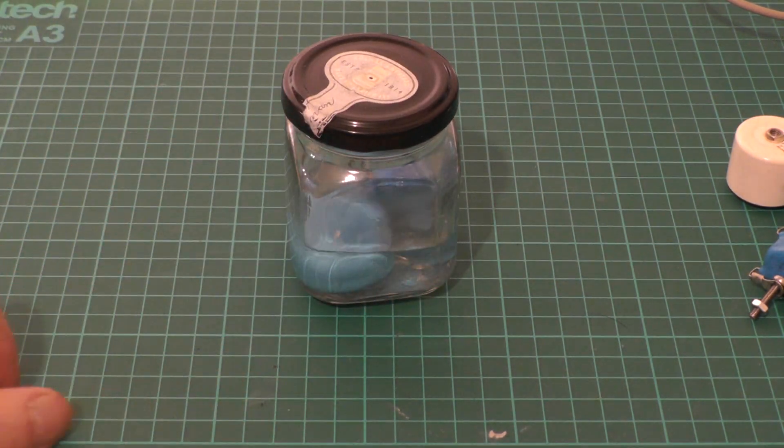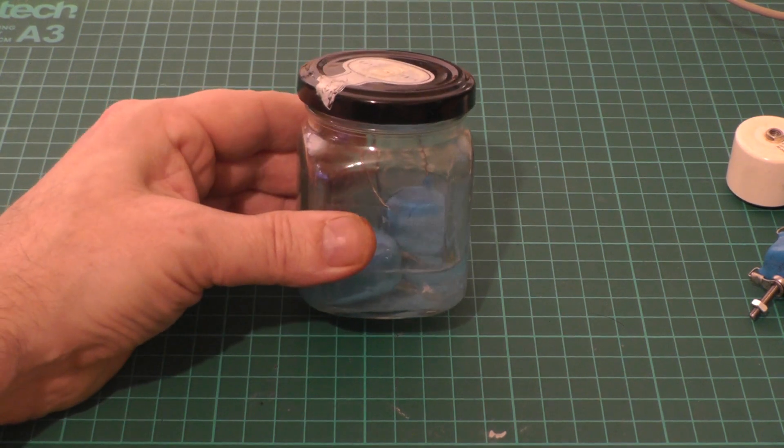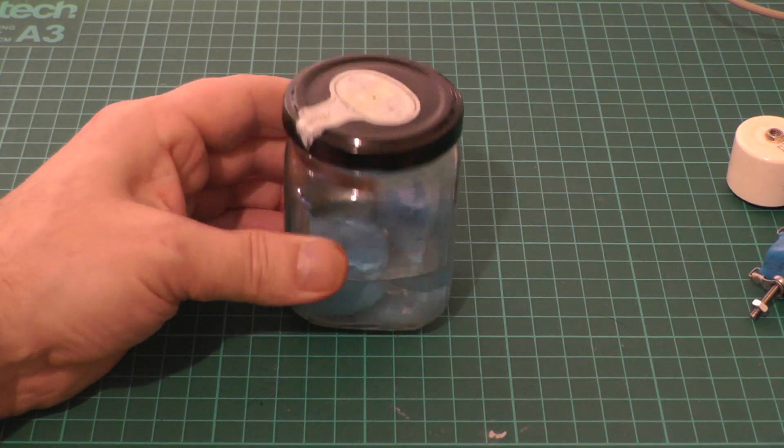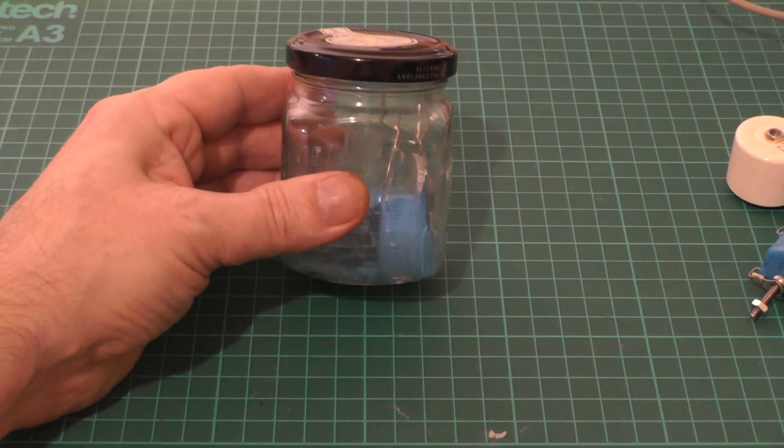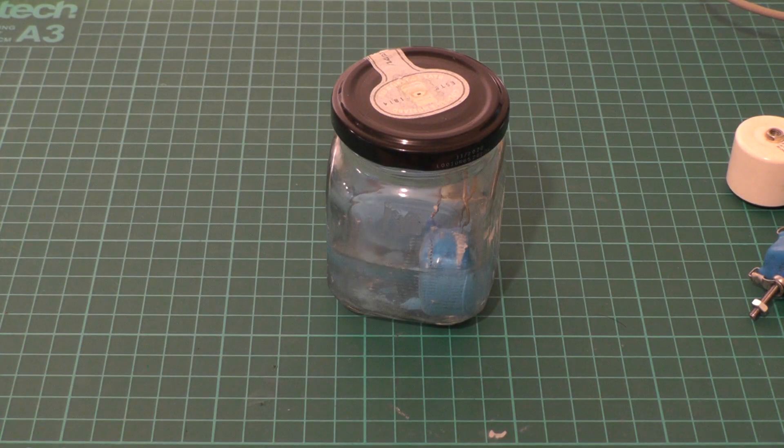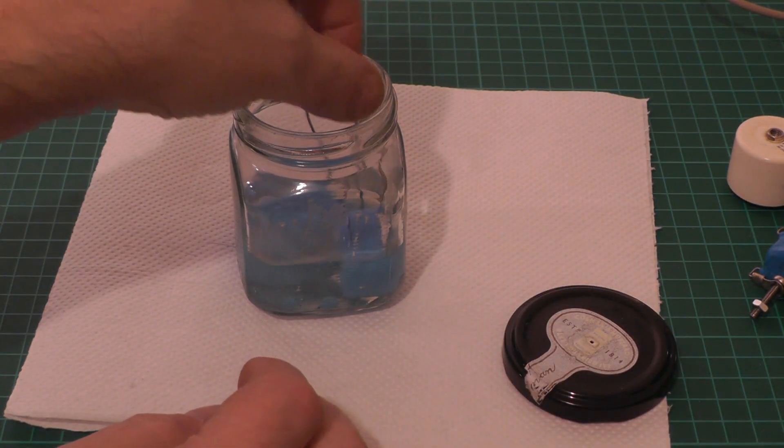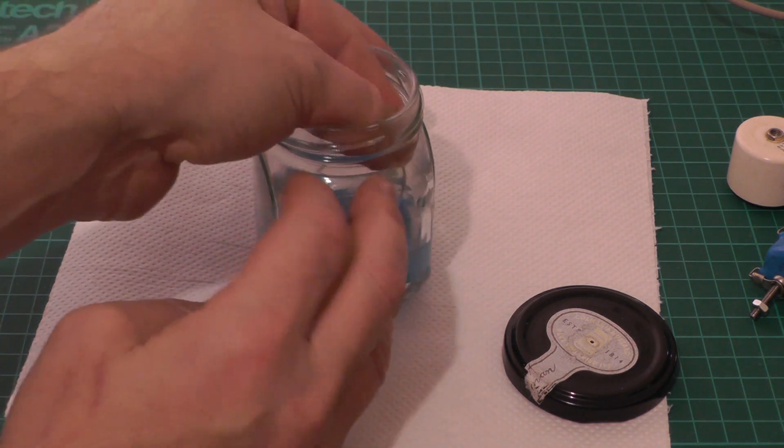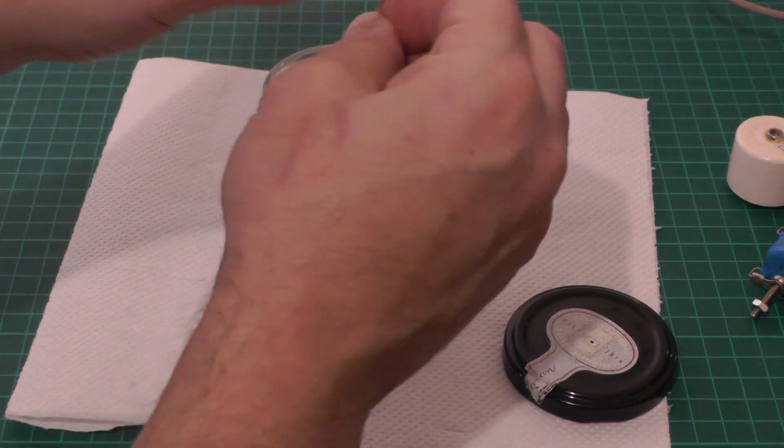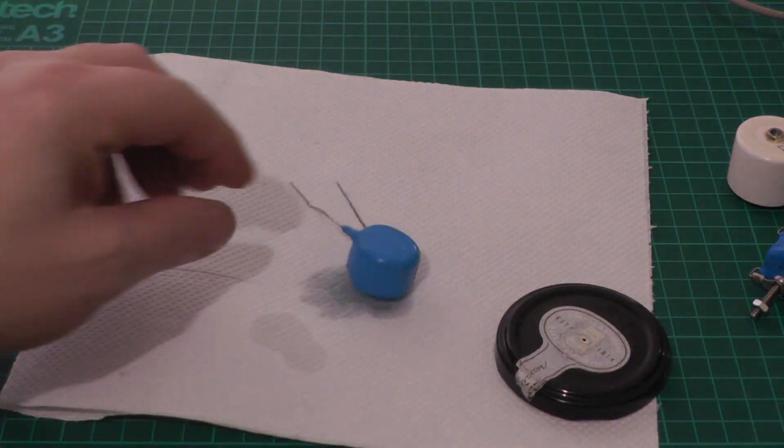So here's my little science experiment. It's a little jar of acetone with some high voltage capacitors submerged in it. These have been in here for about a week, so we'll take one out. Just be able to lift them out by the leads. I don't know how well this will show up on camera.